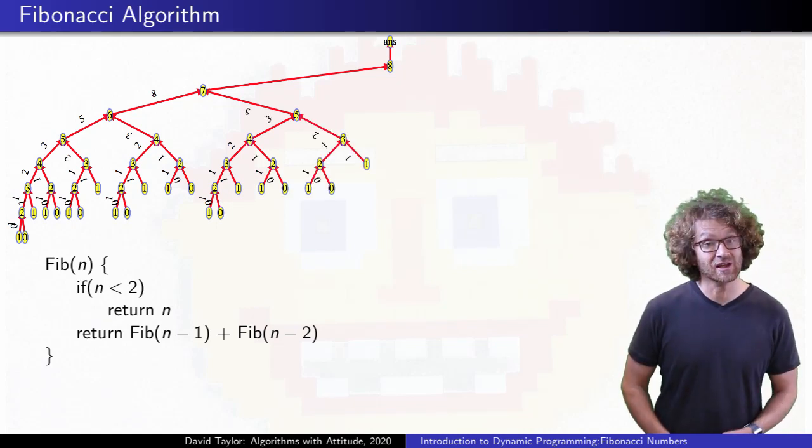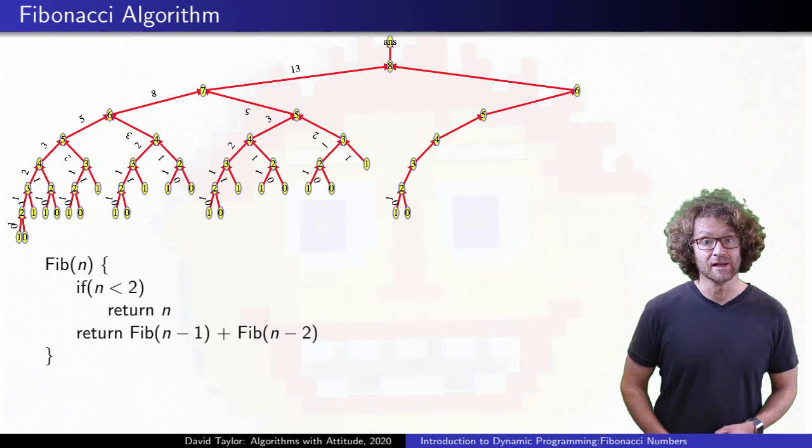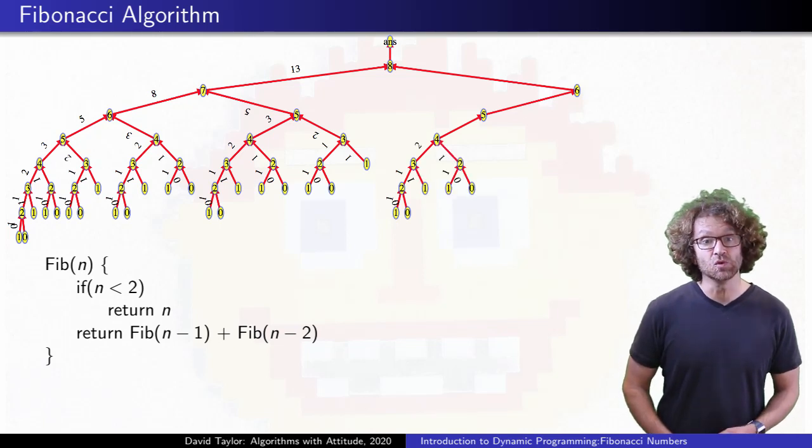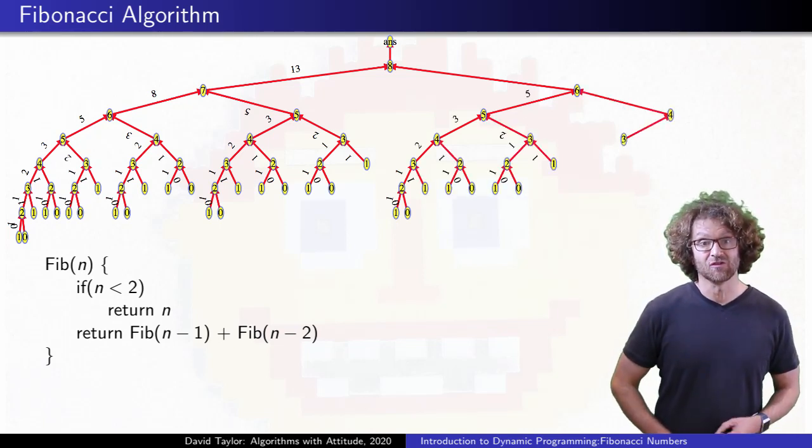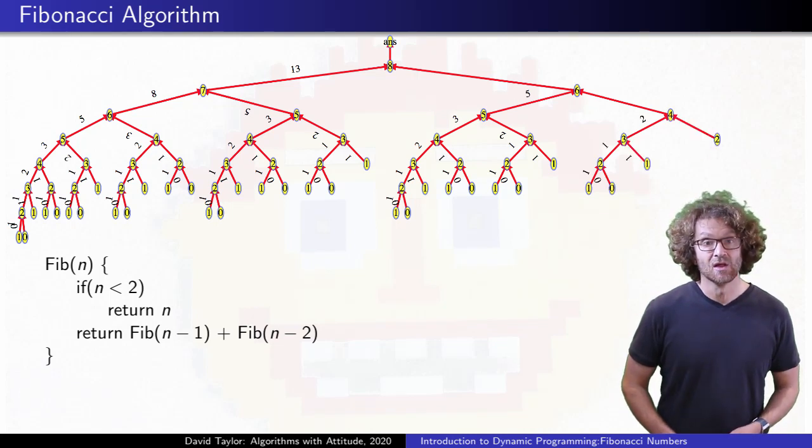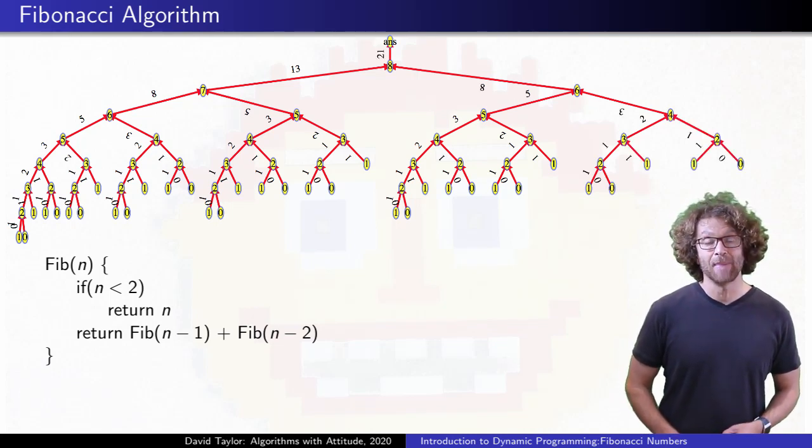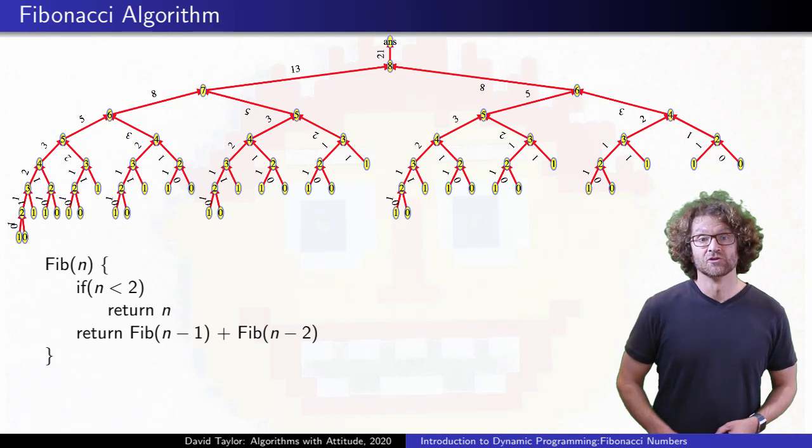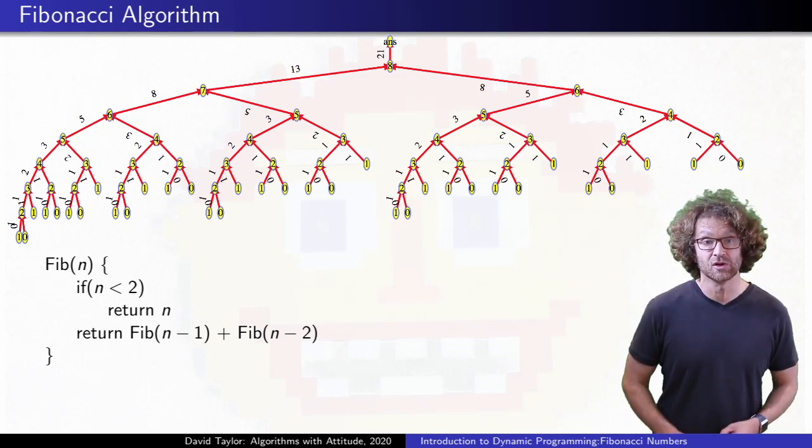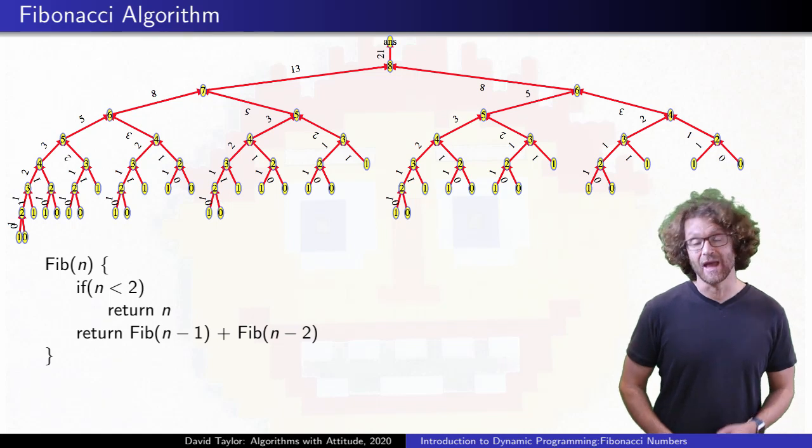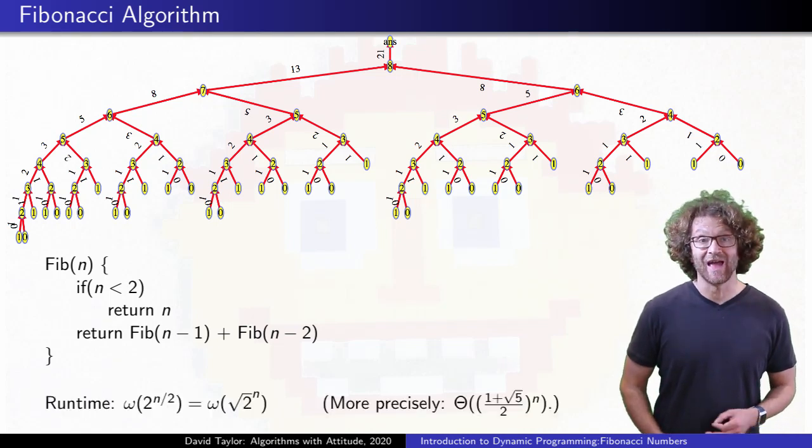Each time you have a second recursive call, on the right, the value goes down by 2 instead of 1. The right spine will have length 4, but more generally, the right hand spine has length about n over 2. So the top n over 2 levels of the tree are a full binary tree, with 2 to the n over 2 nodes. That's exponential.